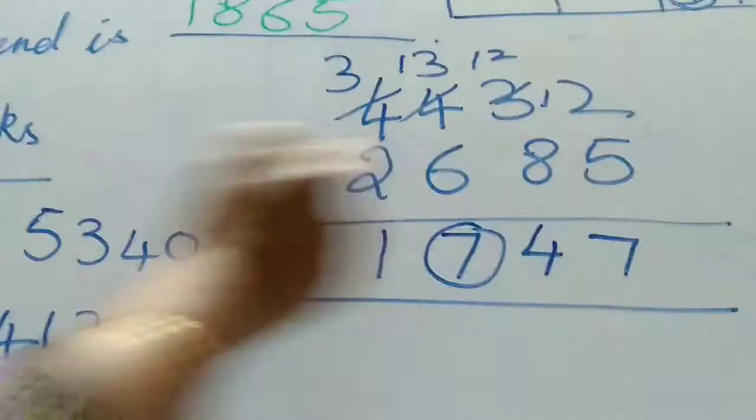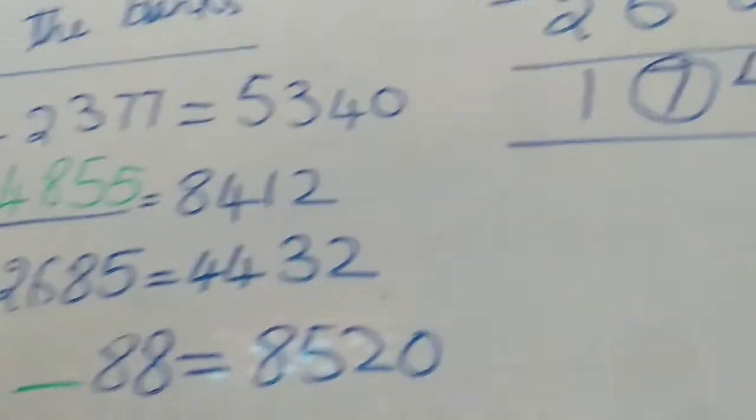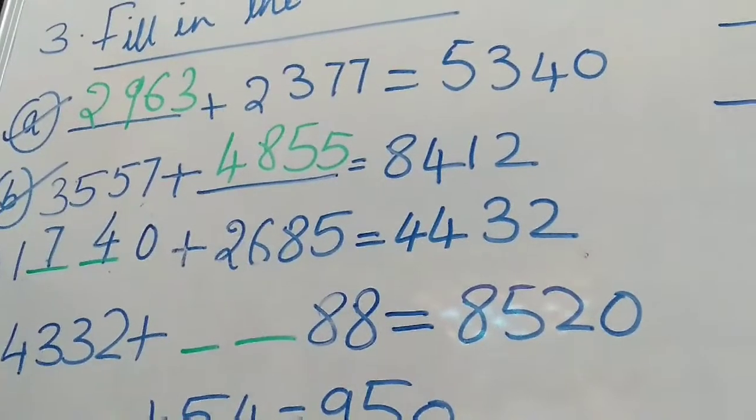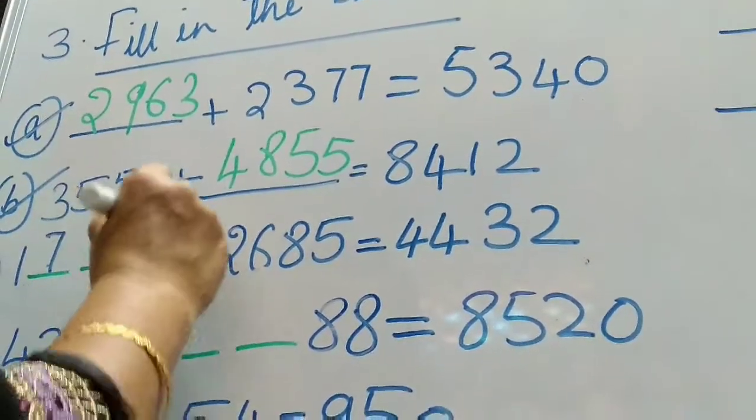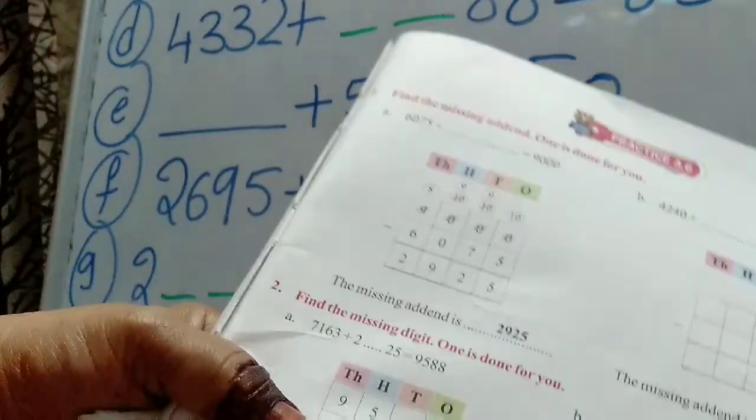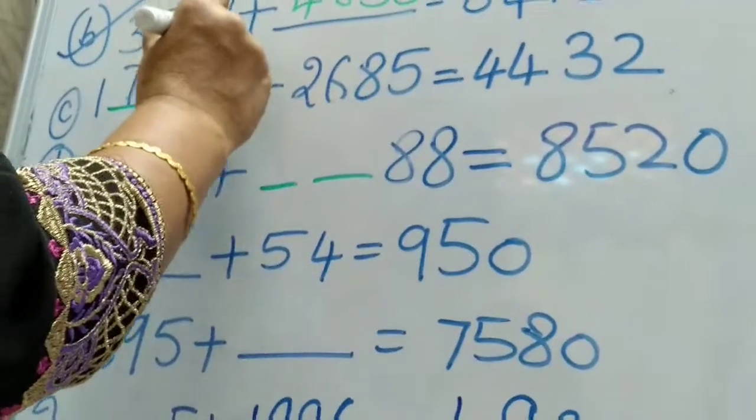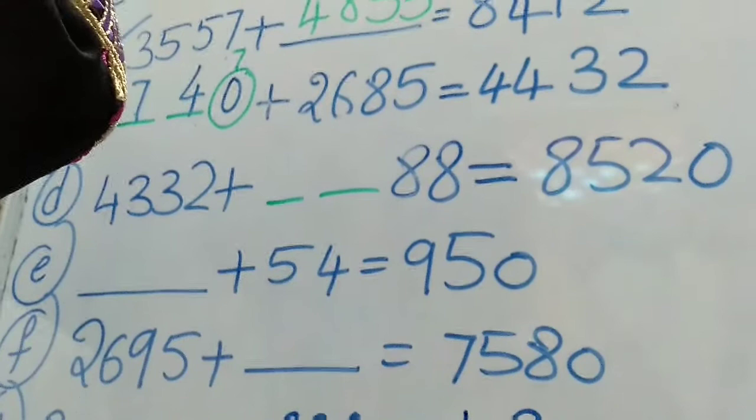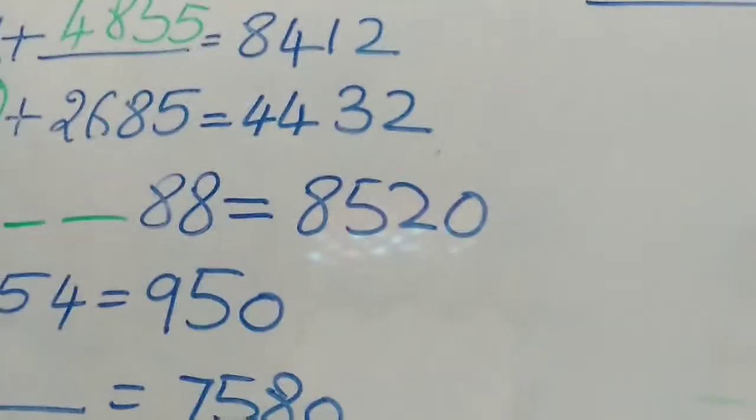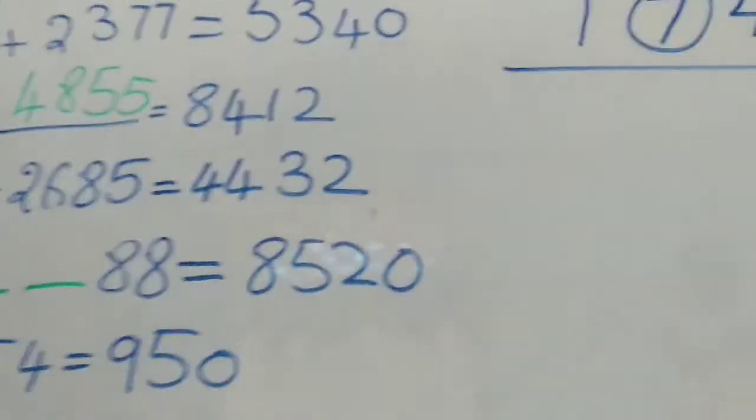1, 7. You have to write 7 here. But children, in the textbook, they have given us 0 here. But 0 is not a right answer. 7 is the right answer. So you write down 7 here.